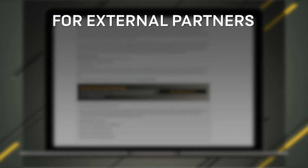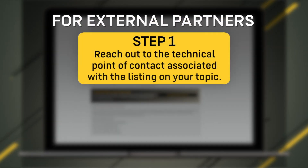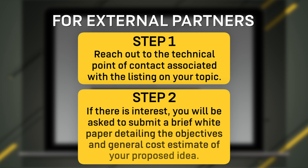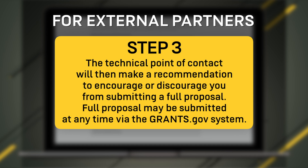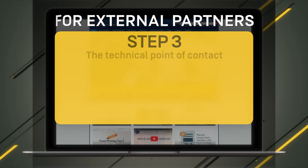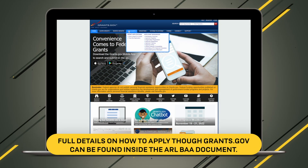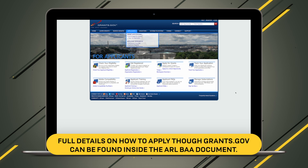For external partners interested in applying, you are strongly encouraged to first reach out to the technical point of contact associated with the listing on your topic. If there is interest, you will be asked to submit a brief white paper detailing the objectives and general cost estimate of your proposed idea. The technical point of contact will then make a recommendation to encourage or discourage you from submitting a full proposal. A full proposal may be submitted at any time via the Grants.gov system. Full details on how to apply through Grants.gov can be found inside the ARL-BAA document.